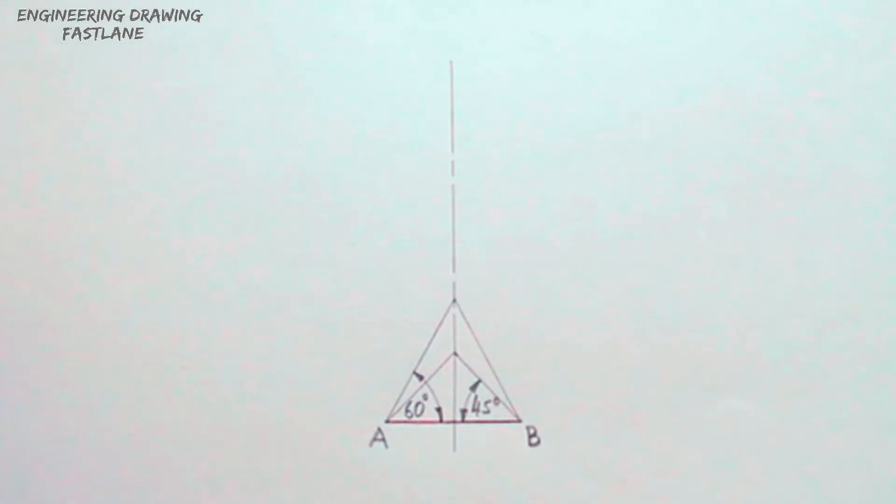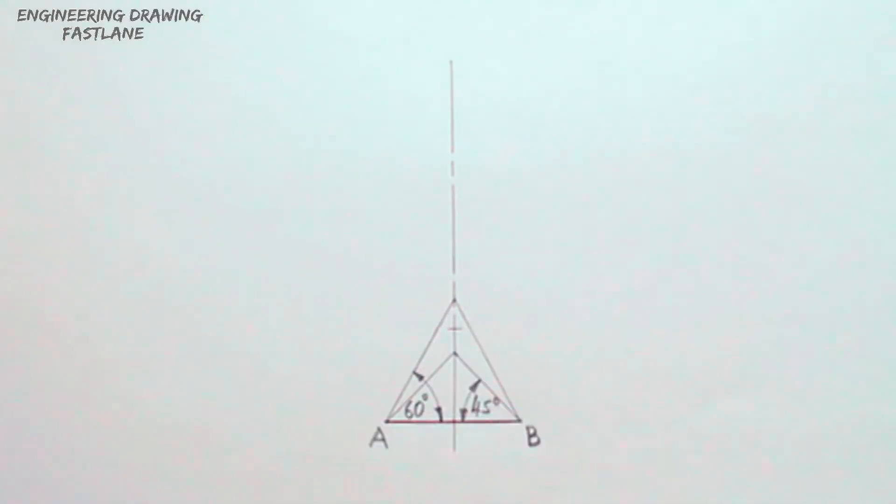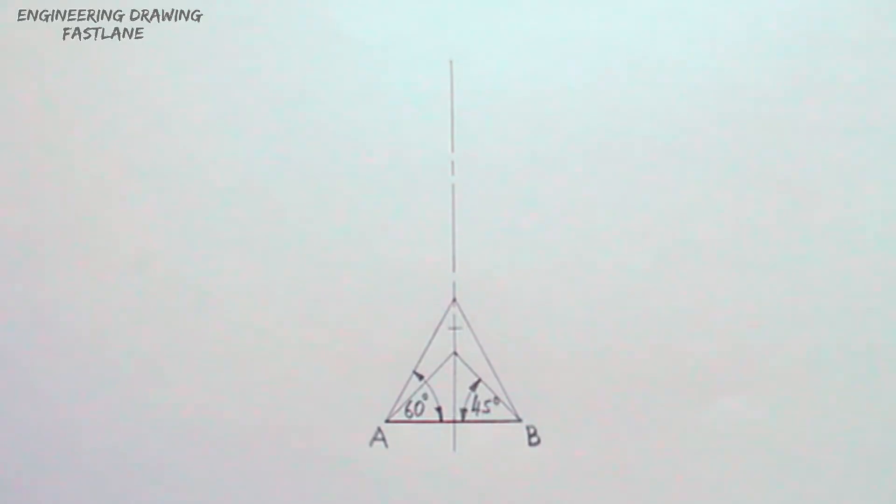Number the apices of these triangles 4 and 6. Number the center of line 4, 6, 5.